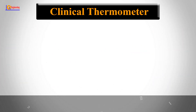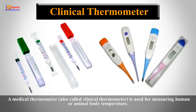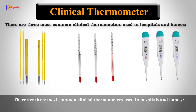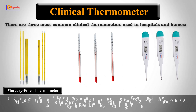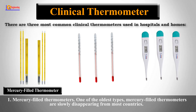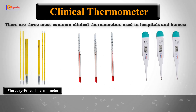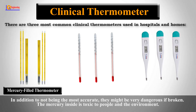Clinical thermometer. A medical thermometer, also called a clinical thermometer, is used for measuring human or animal body temperature. There are three most common clinical thermometers used in hospitals and homes. Mercury-filled thermometers are one of the oldest types and are slowly disappearing from most countries. In addition to not being the most accurate, they can be very dangerous if broken, as the mercury inside is toxic to people and the environment.